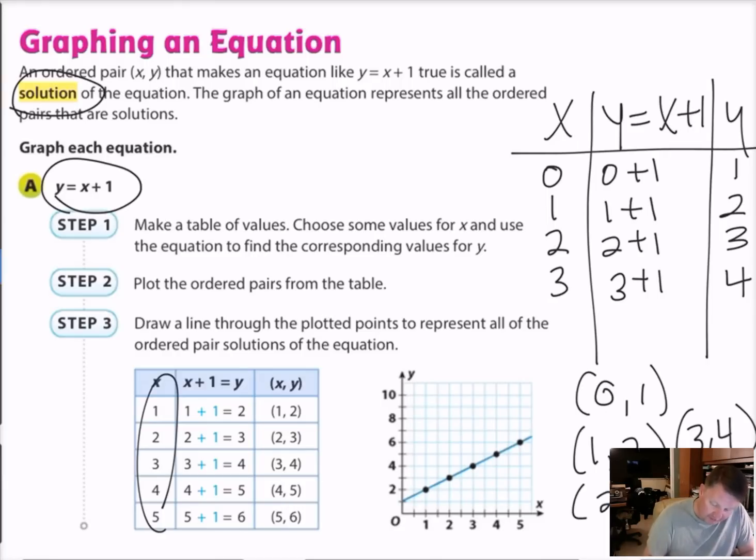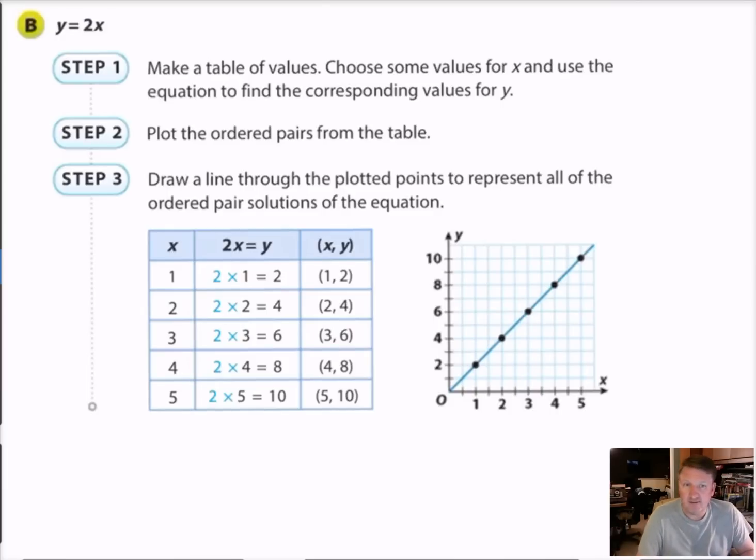Then we can go and look at the graph here and see that all these points are on that graph. Even though they didn't do this one in this table of values, it's still here. 0, 1, right there. 1, 2, that was my next one. 2, 3, that was the next one. And then 3, 4, that was my final one. So that's all there is to finding out how to graph an equation.